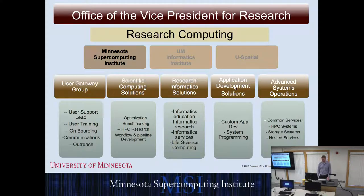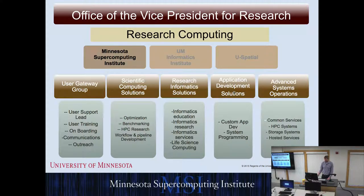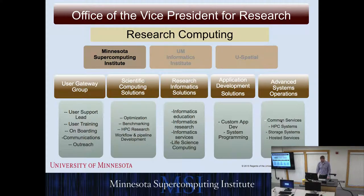We also have a Research Informatics Solutions group that does bioinformatics and helps biological researchers run their pipelines and life science computing. There's an Application Development group that builds custom software for researchers — for example, helping a materials science group build a website to display and interact with their visualizations. And there's the Advanced Systems Operations group — the system administrators who keep the systems running well for all researchers.